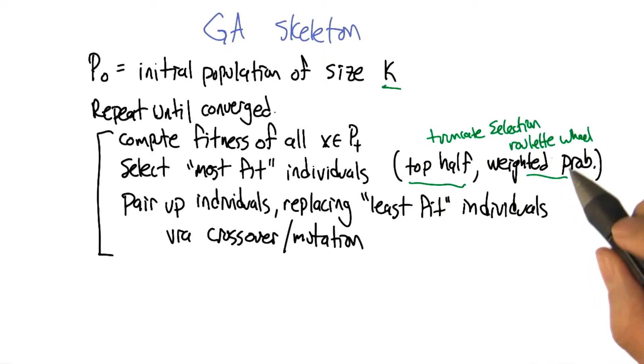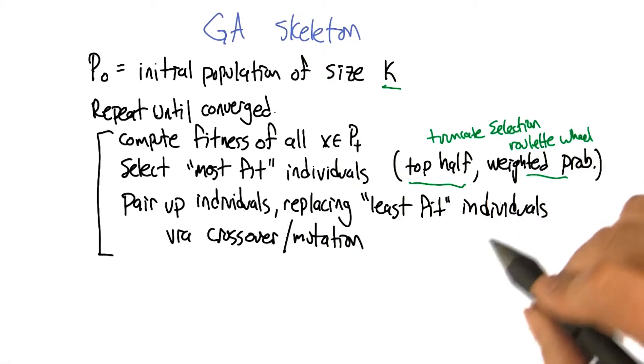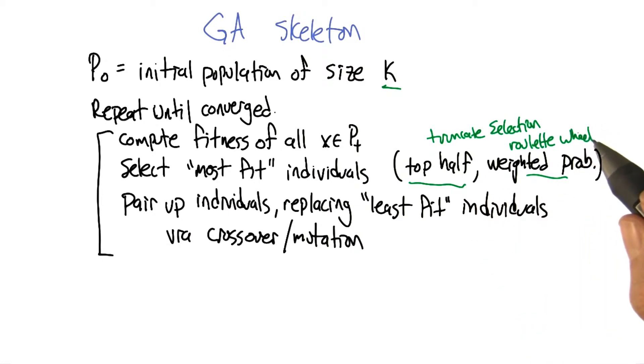It's a similar kind of idea. And in fact you can use Boltzmann distribution type ideas, simulated annealing type ideas for doing this selection where you have a temperature parameter. If you set the temperature parameter to zero, then you get something like just choosing the top half. And if you set the temperature to be something like infinity, then you're just going to randomly choose individuals from the population.